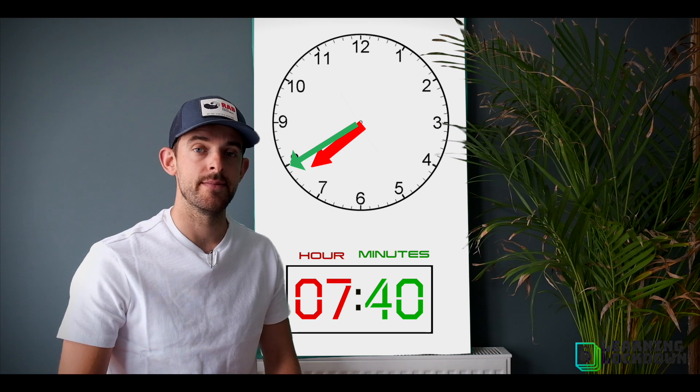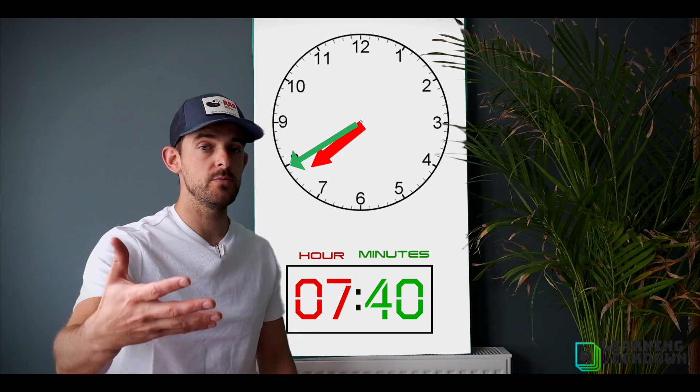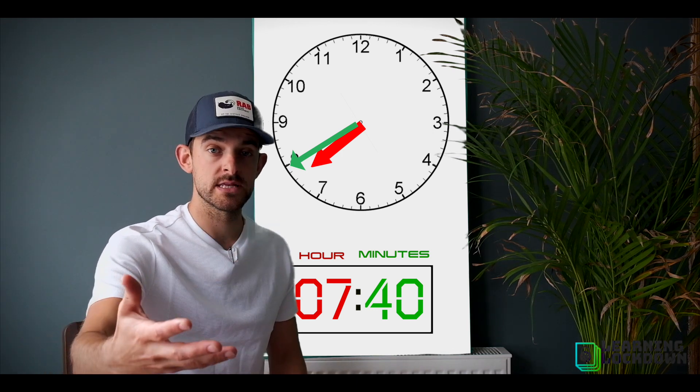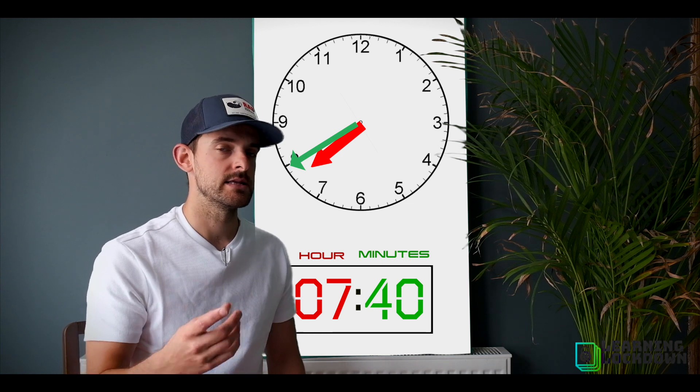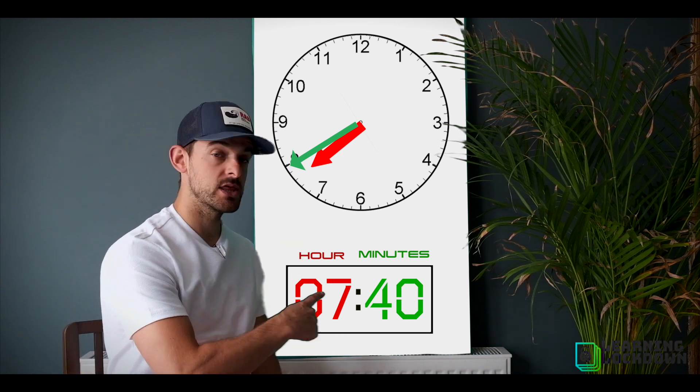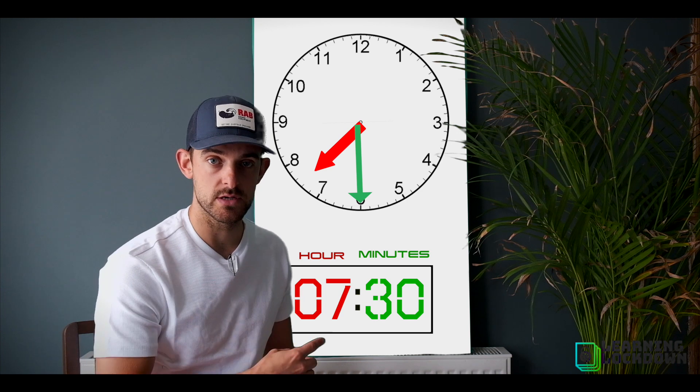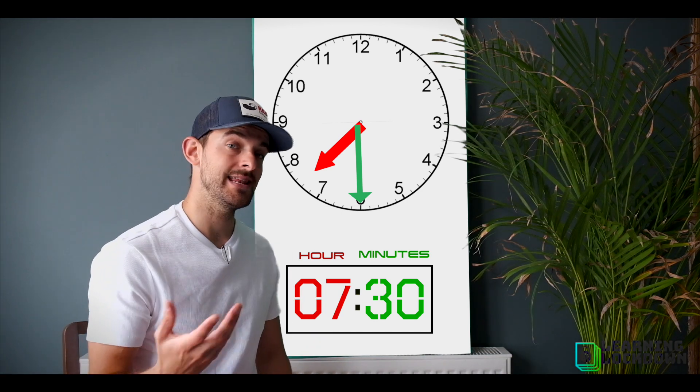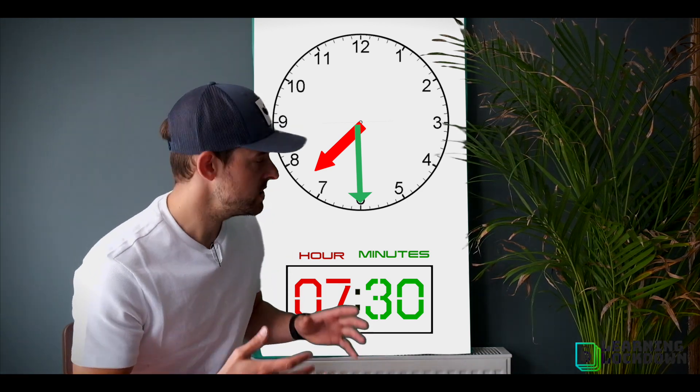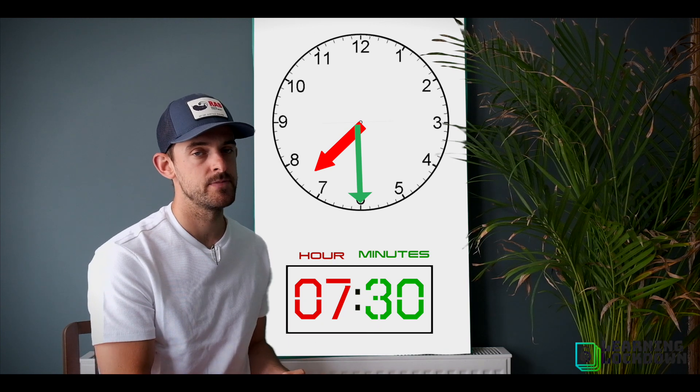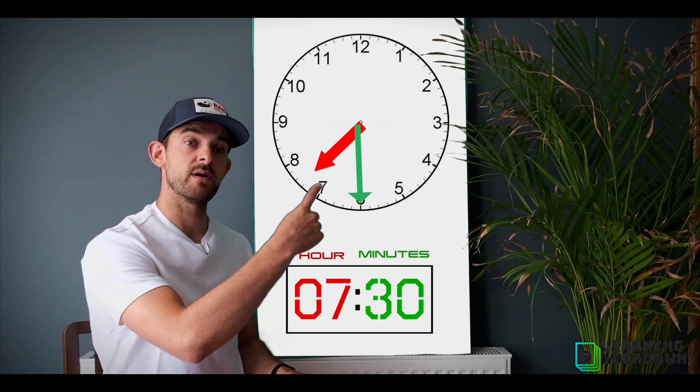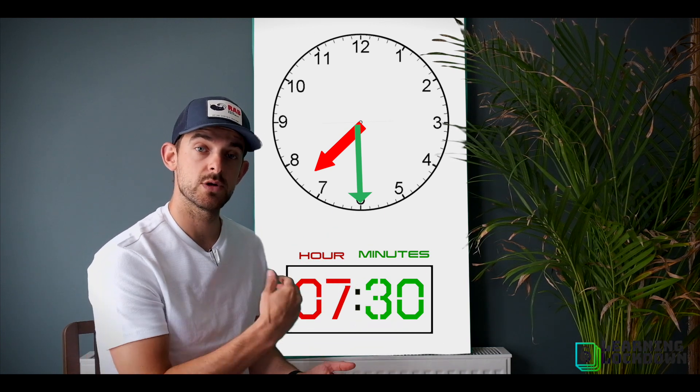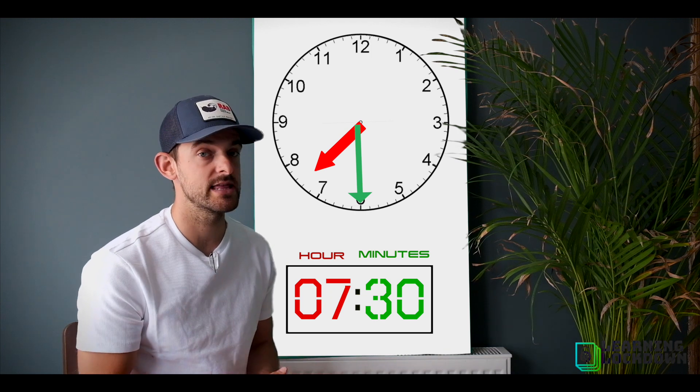So one really important skill with telling the time is knowing what time it will be if we move forward in time, or maybe we can move back in time. If I need to be in work by 7:30 and it takes me 40 minutes to get there, when should I leave? Well, I'd move backwards because I know I need to be there at 7:30. Let's go back and do my 40-minute journey in reverse to see what time I should have set off to make sure I get there by 7:30.